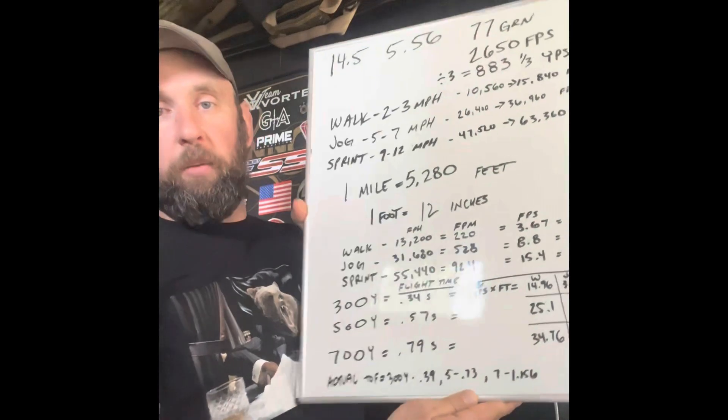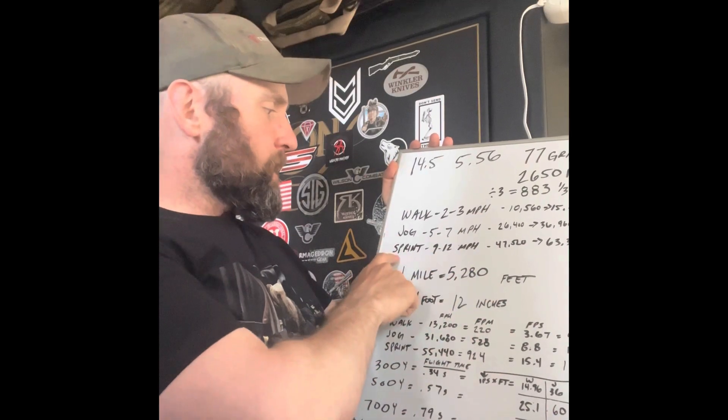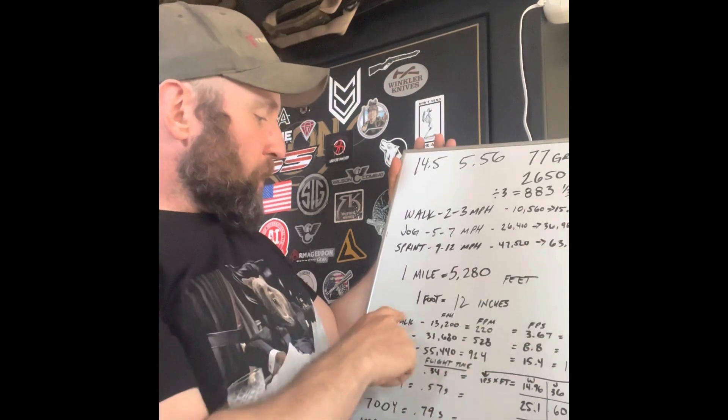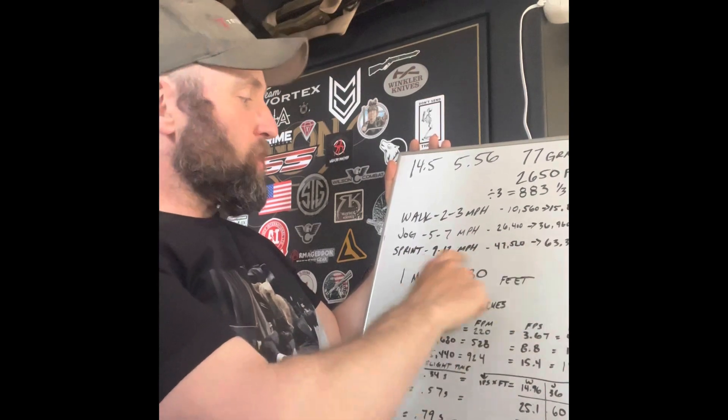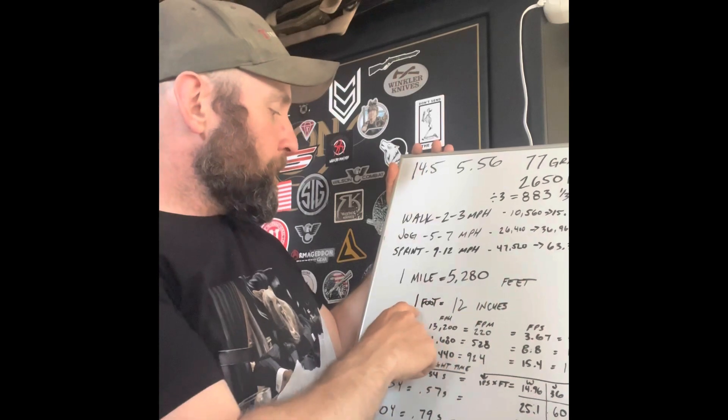I've got a big whiteboard here — I'll post a picture of it so you can scroll back and forth. Basically, 2650 feet per second as a baseline — how many yards per second is that? That gives you 883 yards per second, which will become relevant shortly. We're going to say walking is 2–3 mph, jogging is 5–7, and sprinting is 9–12. I basically took the average of each range for the rest of this. One mile equals 5,280 feet; one foot equals 12 inches.